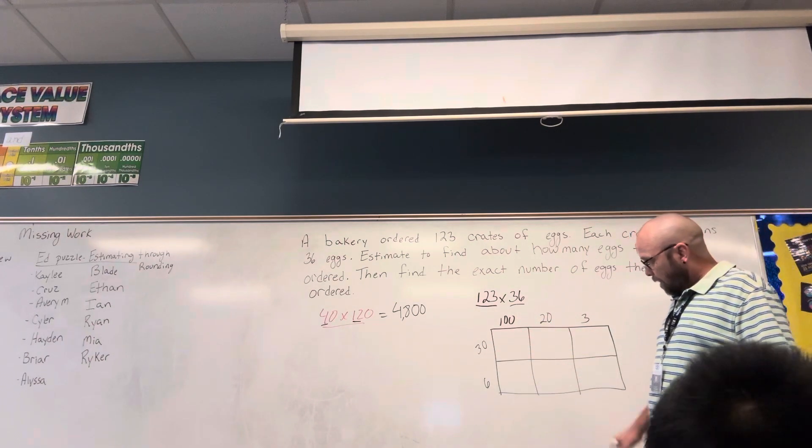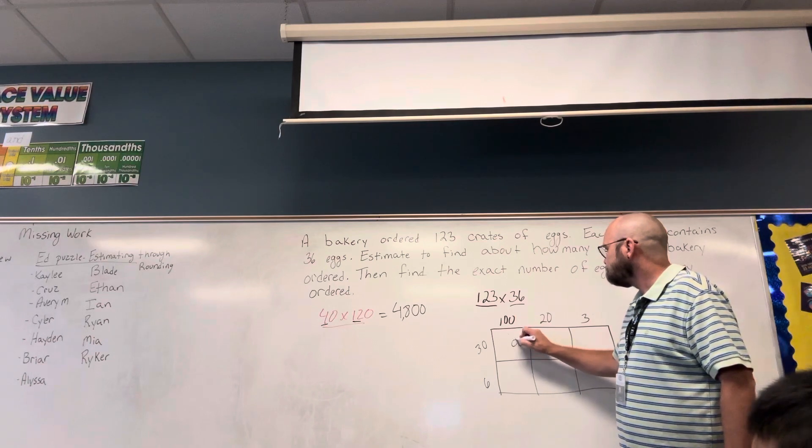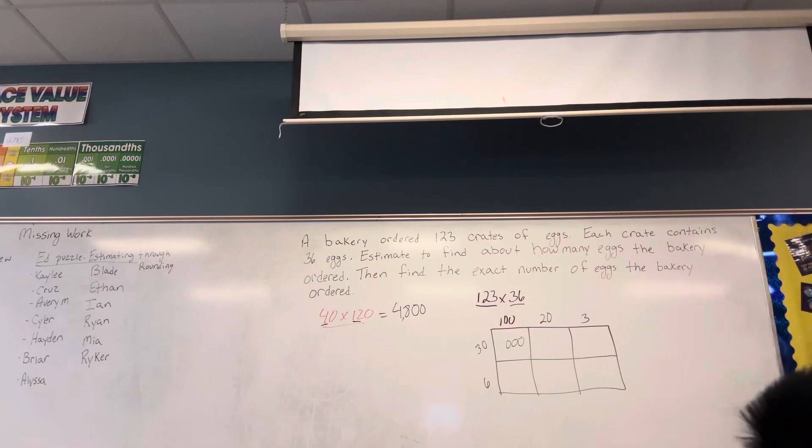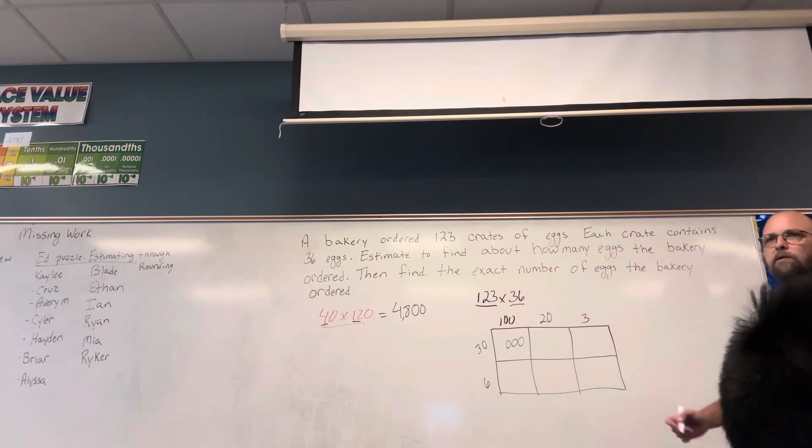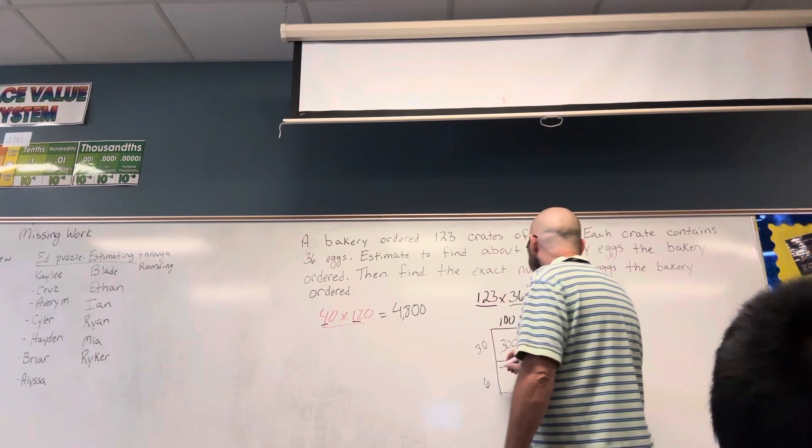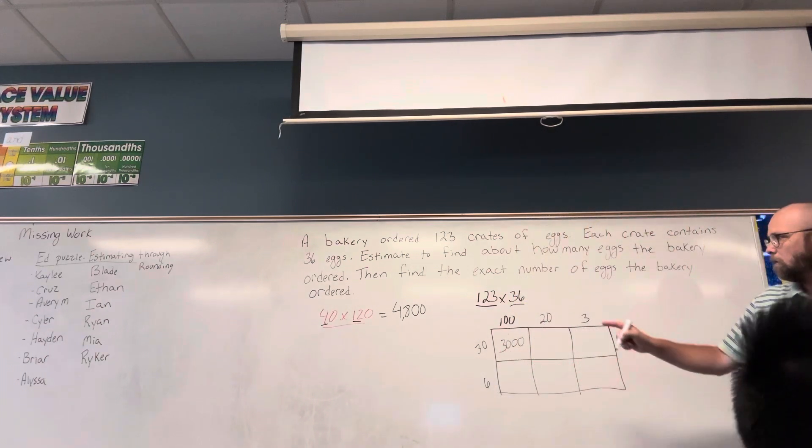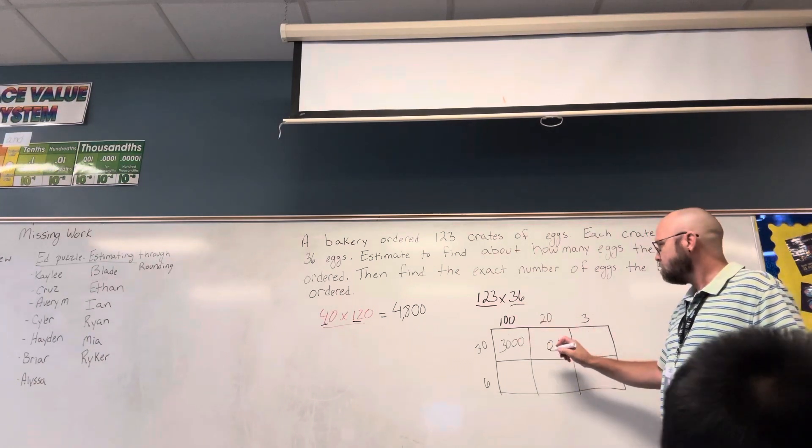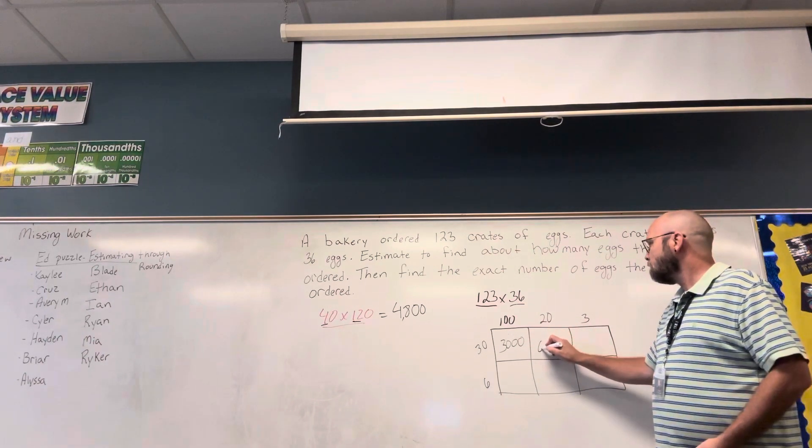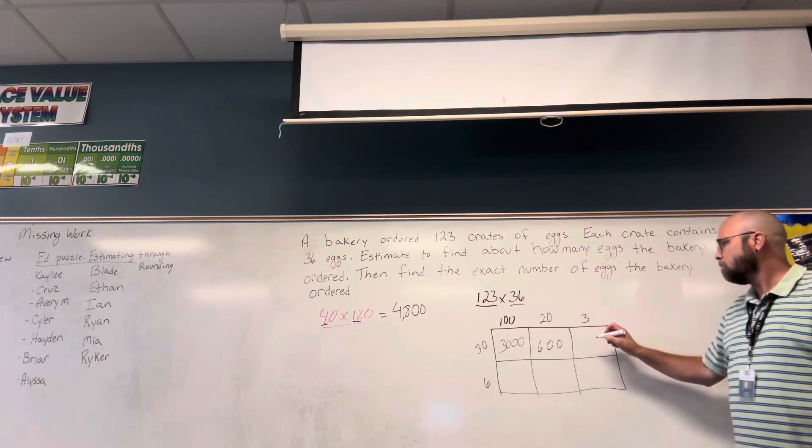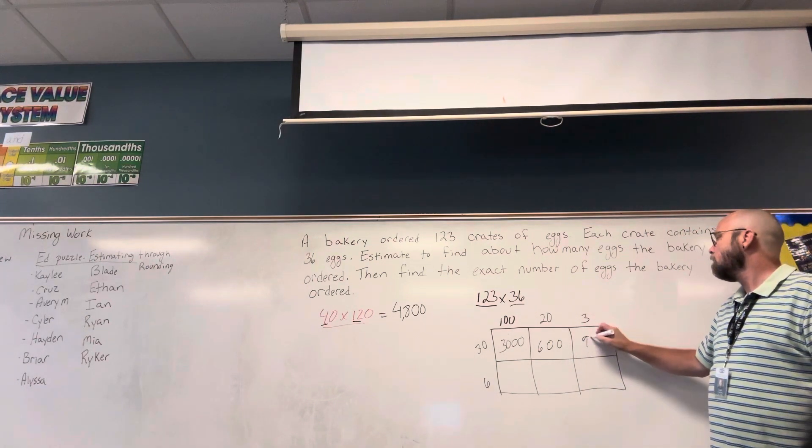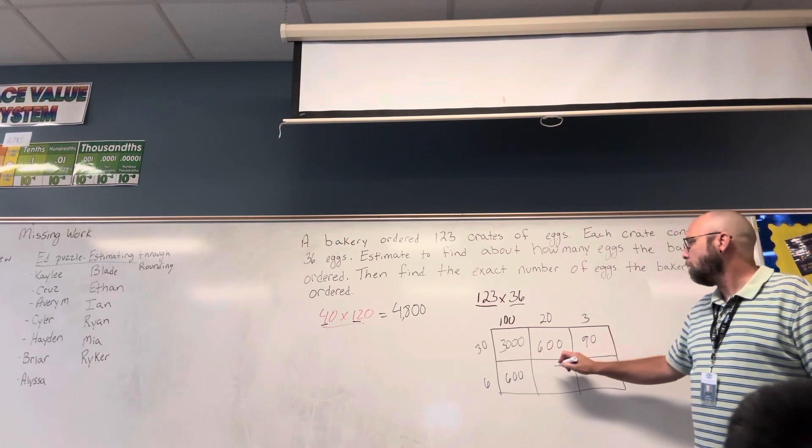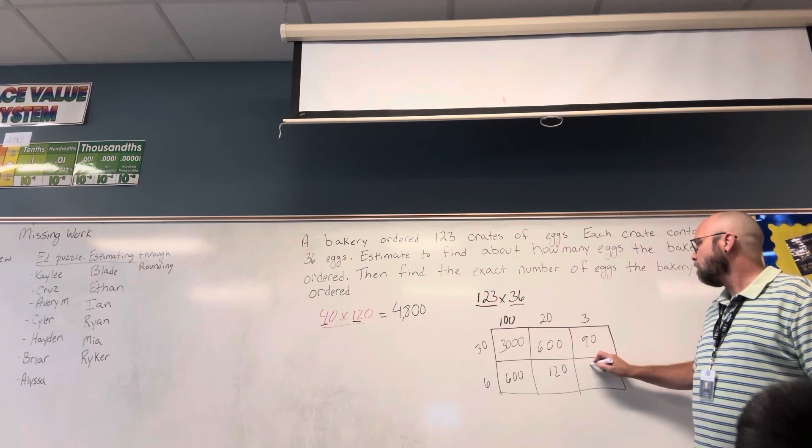100 times 30. Well, I have three zeros as my trailing numbers. Then I just have to know 3 times 1, it's 3,000. I have two zeros, a zero at the end of each one. 2 times 3 is 6. 30 times 3 is 90. This would be 600. This would be 120. And this would be 18.